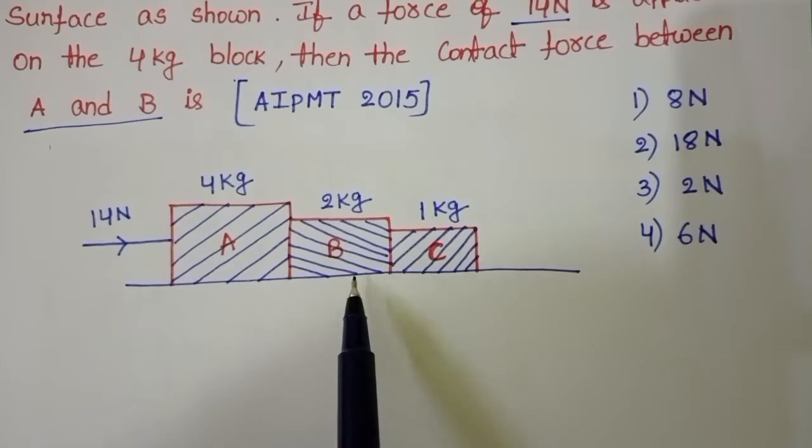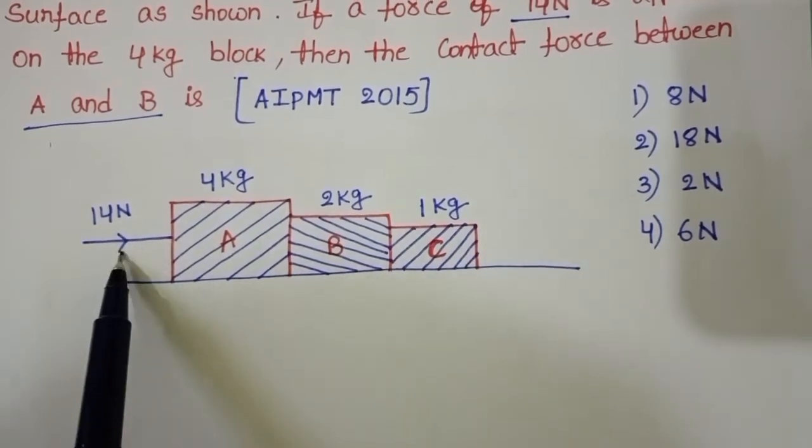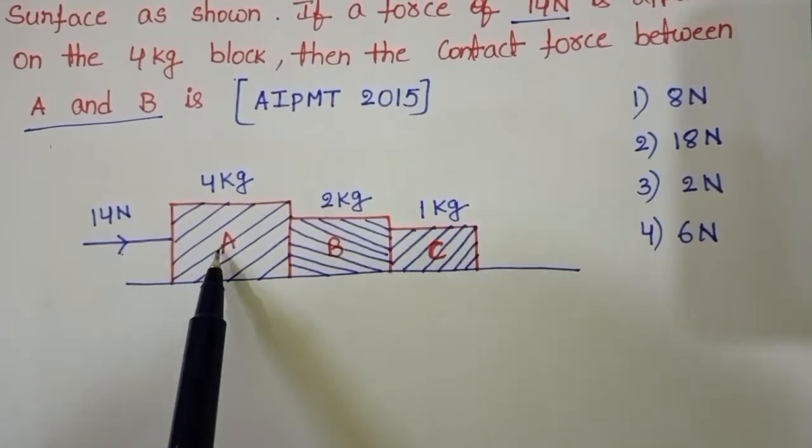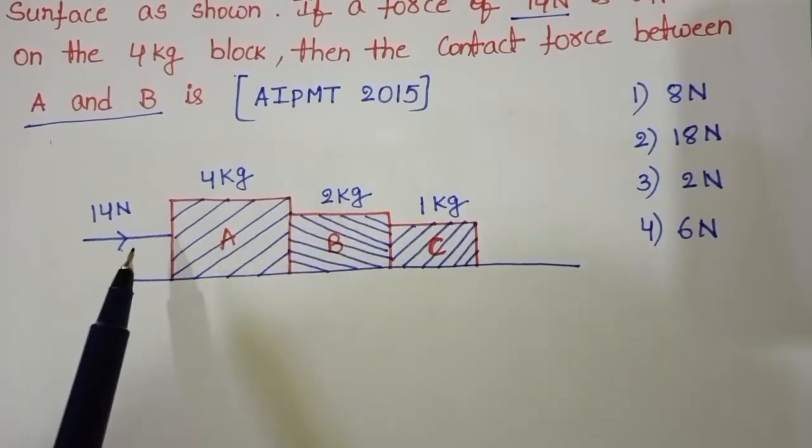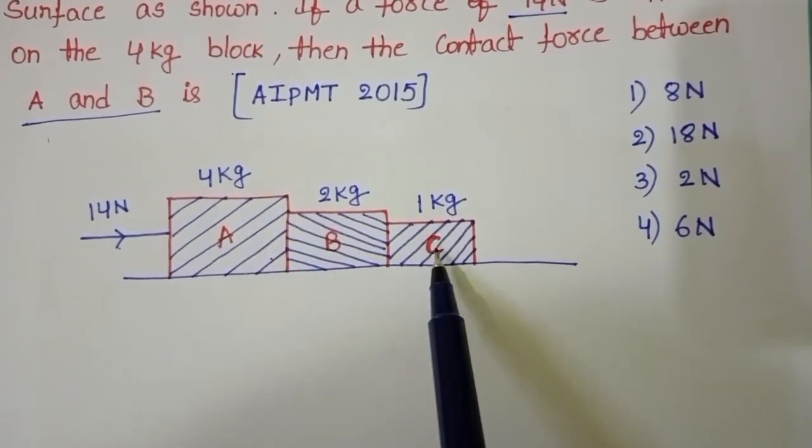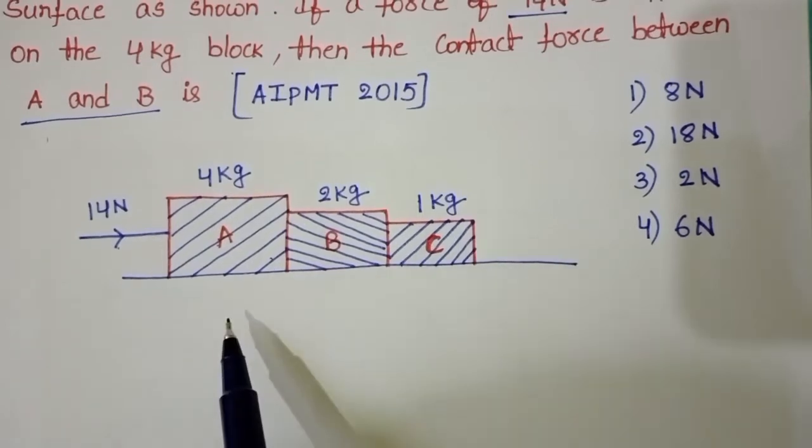So, frictional force equals zero. 14 N of force is applied on A. Due to that force, A pushes B and C blocks in the forward direction.